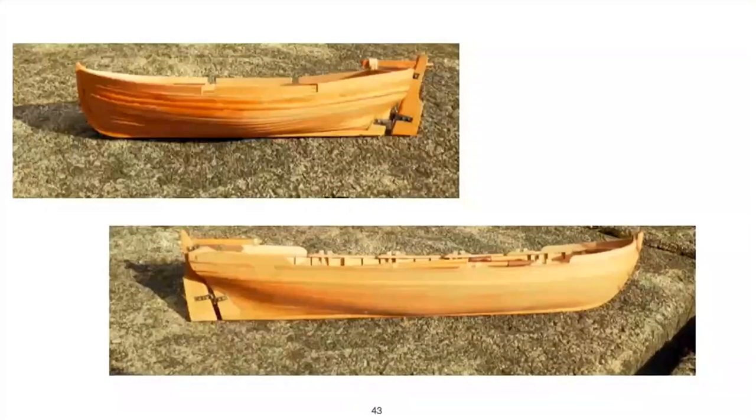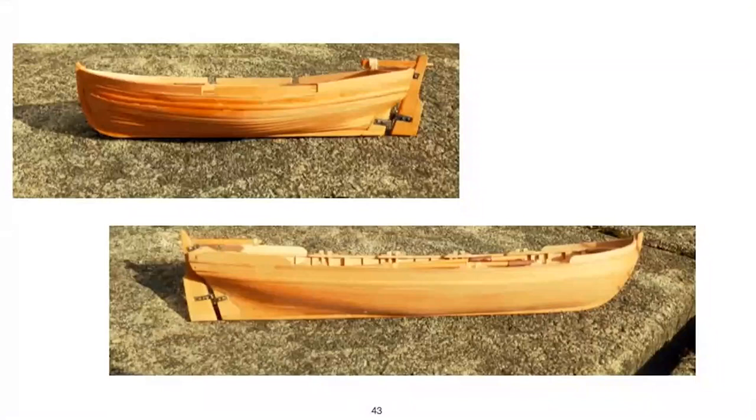Of the boats, the jolly boat was clinker built, that's the one at the top, and the rest were carvel, as seen by, that's the pinnace there at the bottom.